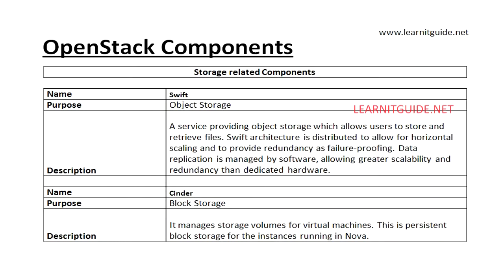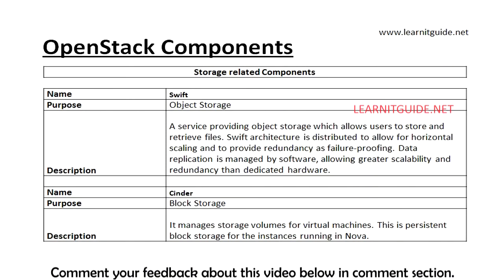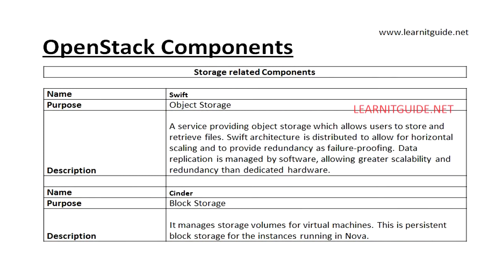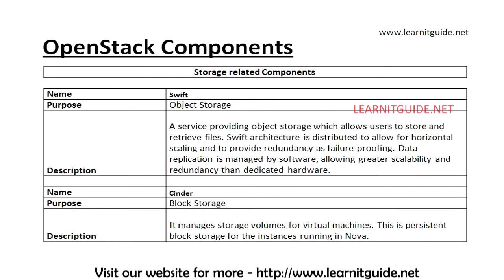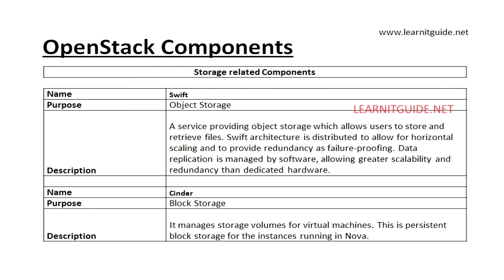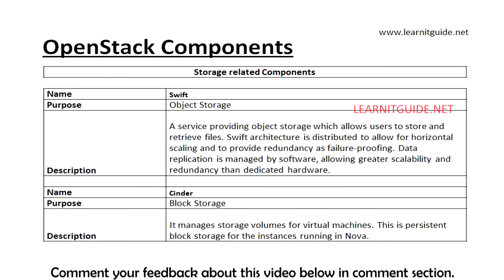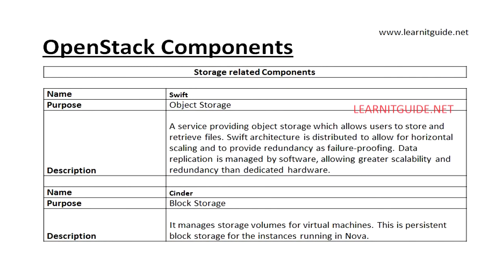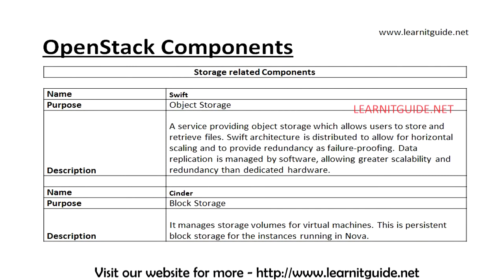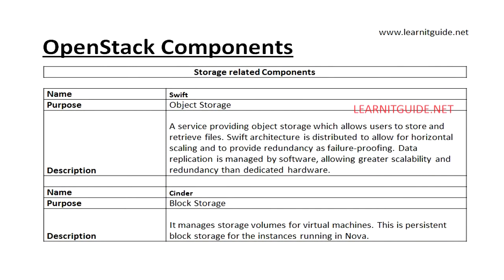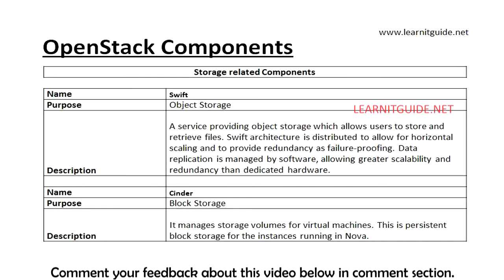Now, storage-related components. We have a few components for storage. The first is Swift. The purpose of Swift is object storage — a service that allows users to store and retrieve files. Swift's architecture is distributed to allow horizontal scaling and to provide redundancy as a failure-proof design, and data replication is managed by software allowing greater scalability and redundancy than dedicated hardware. The next one is Cinder — a block storage component that manages storage volumes for virtual machines. Cinder provides persistent block storage for instances running in Nova.